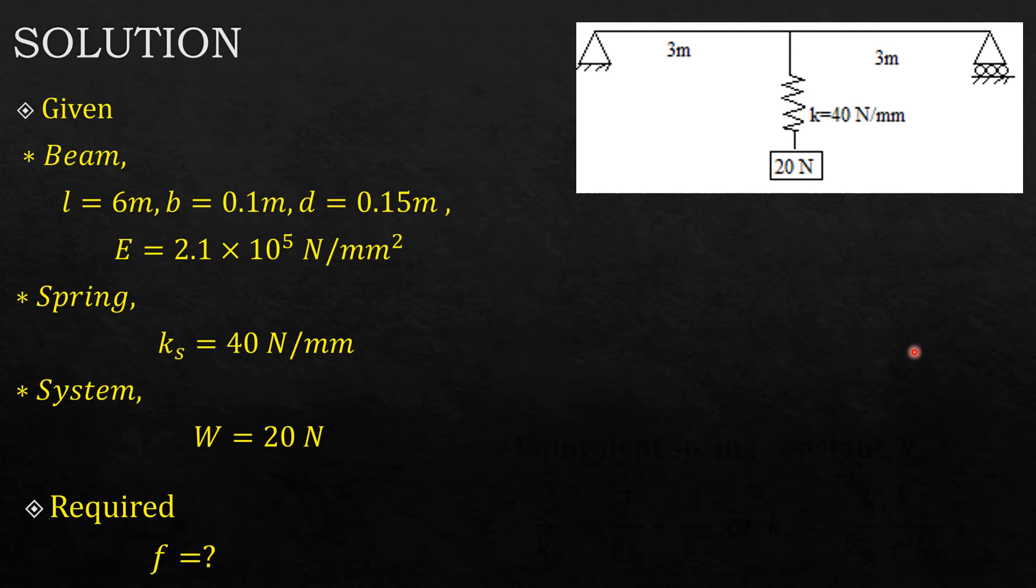Looking at the problem, it's always good to visualize how the dynamic system will be. If you look at this problem, you realize that because of the spring that is suspended downward here, our motion direction is in this way. The beam is simply supported, so this is what we expect to be the deformation shape. You see there is the deflection occurring over the beam.